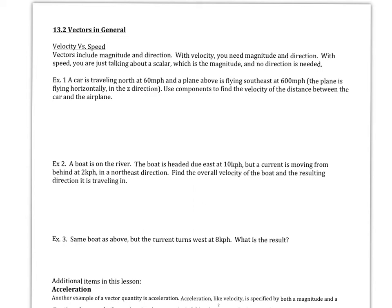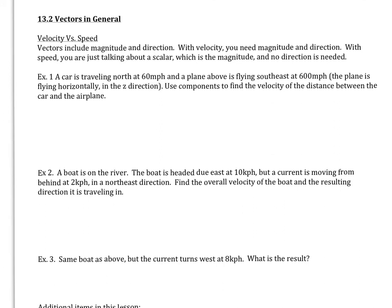This is section 13.2, dealing with vectors in general. One concept you've dealt with before is velocity versus speed. When dealing with vectors, vectors include both magnitude and direction. So when we talk about velocity we need both magnitude and direction, but when we deal with speed we're just talking about a scalar — and with a scalar it's just the magnitude, so we don't need a direction at all.